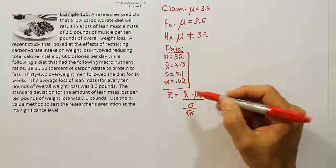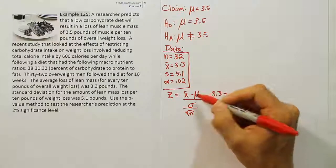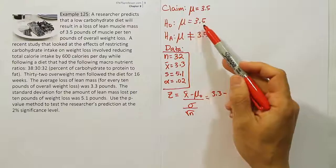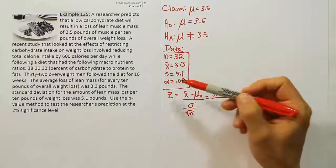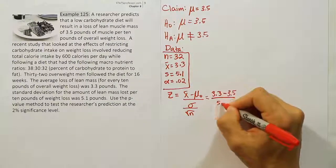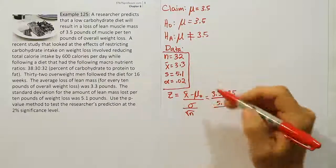Plugging those numbers in, we get 3.3 minus the value from the null hypothesis, which is 3.5, divided by the standard deviation 5.1 over the square root of 32.